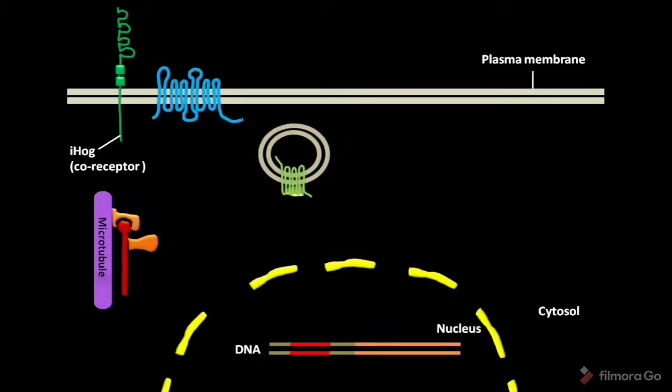Another transmembrane protein, PATCHED, is predicted to cross the plasma membrane 12 times.